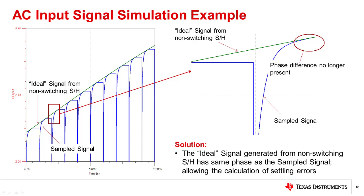This slide shows the sample and hold signal compared to the ideal signal that includes the phase shift. Notice that now the ideal signal tracks the input well, whereas before there was a significant error from the phase delay of the RC filter.